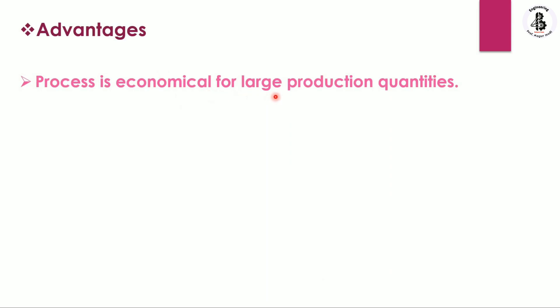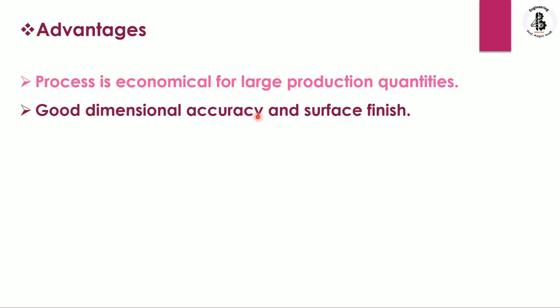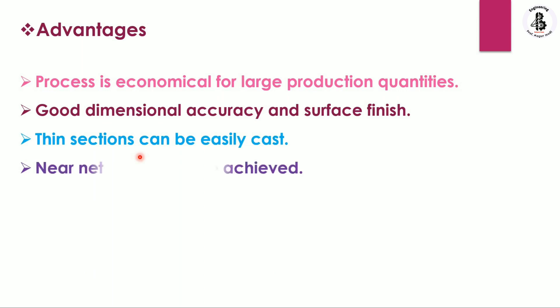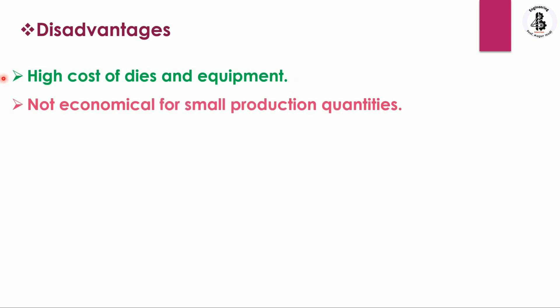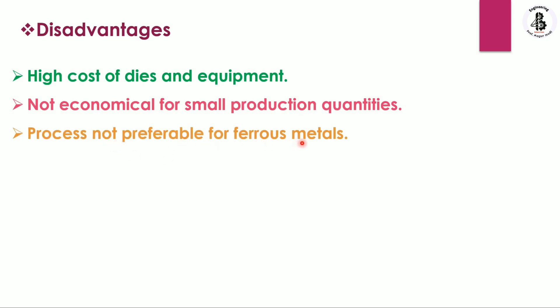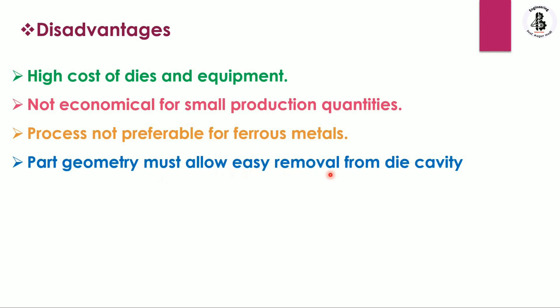The advantages of this process include: it is economical for large production quantities, provides good dimensional accuracy and surface finish, thin sections can be easily cast, and near-net shape can be achieved. The limitations include: high cost of dies and equipment because they are made from metallic materials such as steels or alloys, making it not economical for small production quantities. The process is not preferable for ferrous metals due to their higher melting points, and the part geometry must allow easy removal from the die cavity.